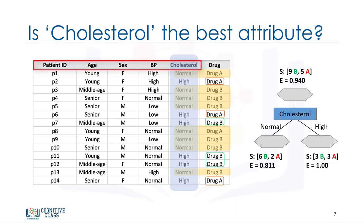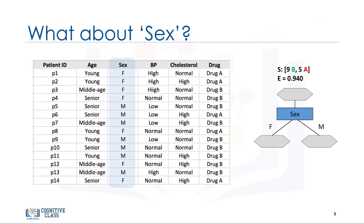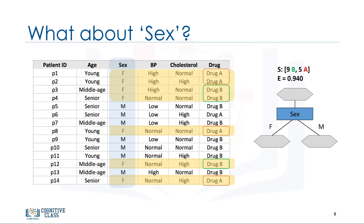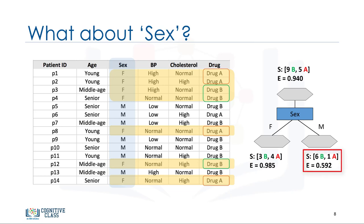We should go through all the attributes and calculate the entropy after the split, then choose the best attribute. Let's try the sex attribute next. When we use the sex attribute to split the data and its value is female, we have 3 patients that responded to drug B and 4 that responded to drug A. The entropy for this node is 0.98, which is not very promising. However, on the male side of the branch, the result is more pure, with 6 for drug B and only 1 for drug A. The entropy for this group is 0.59.